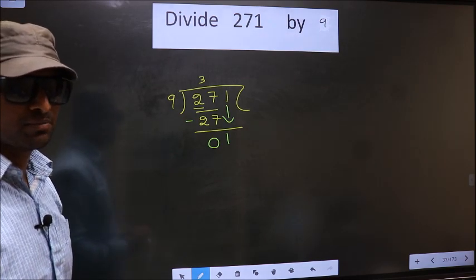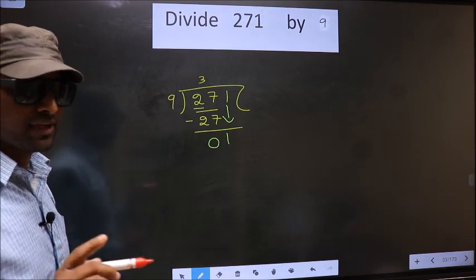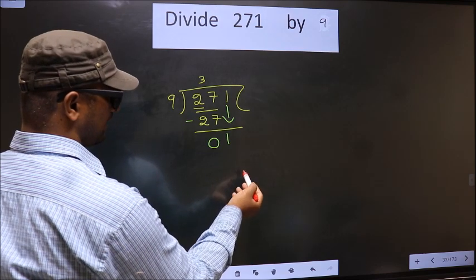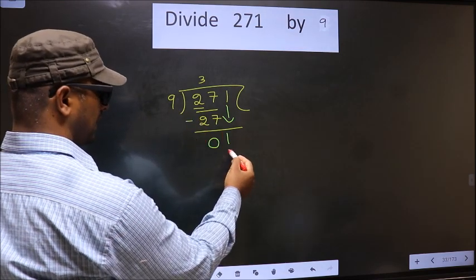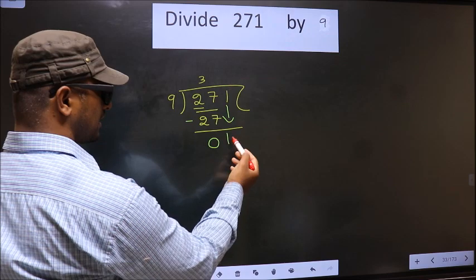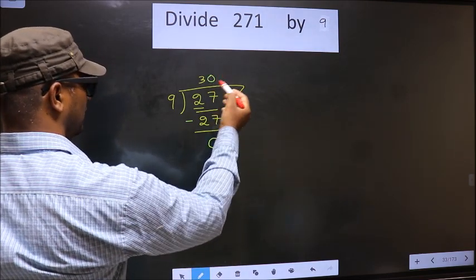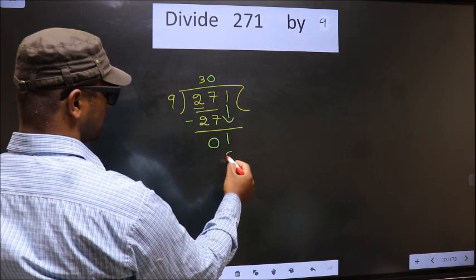Instead, what you should think of is: what number should we write here? If we write 9 here, that is larger than 1, so what we do is we take 0 here. So 9 into 0, 0.